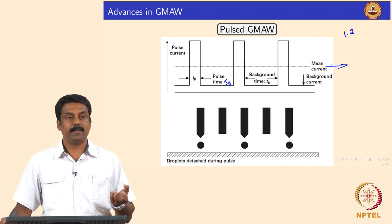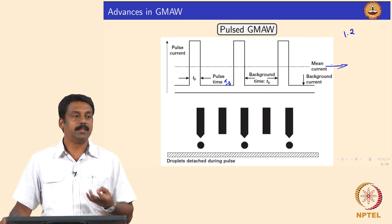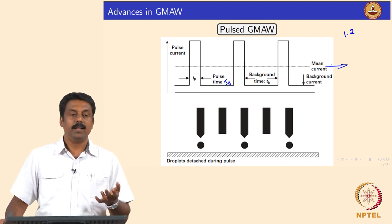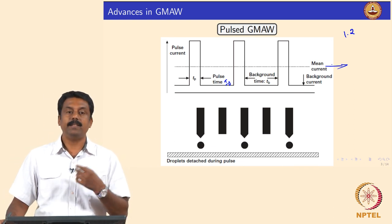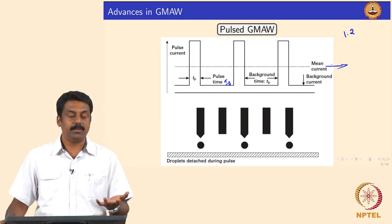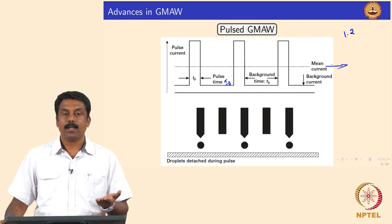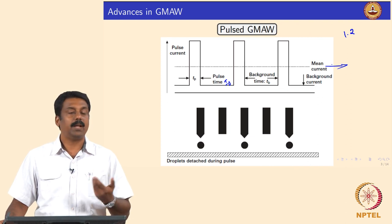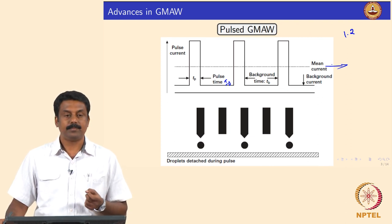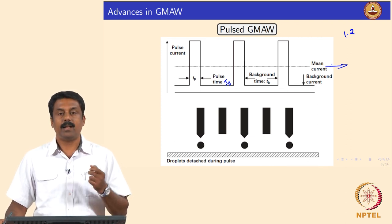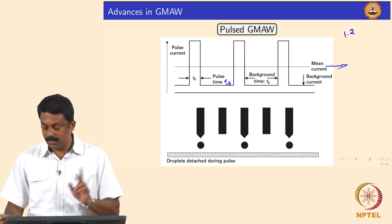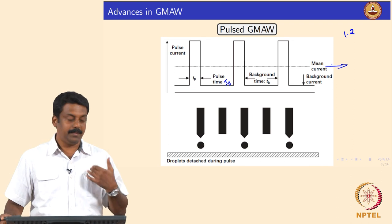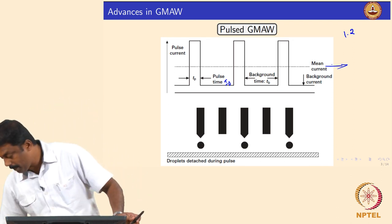This is very advantageous because we are not consuming excess energy, and the transfer characteristics are much nicer than with constant current. You also have a very stable process at a very low heat input. We will see a video of this process and then go to the physics of it.